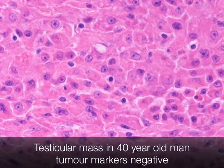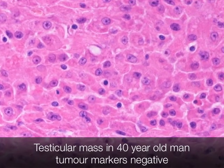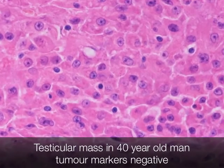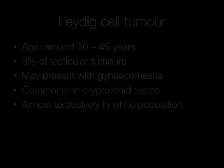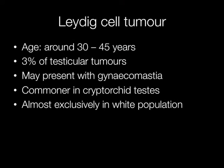This is a Leydig cell tumour, which is the commonest of the sex cord stromal cell tumours, accounting for around 3% of all testicular tumours. They typically occur around the ages of 30 to 45 and may present with gynaecomastia. They are commoner in cryptorchid testes.